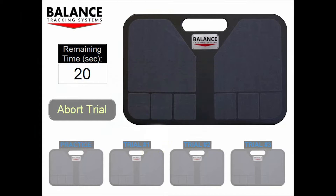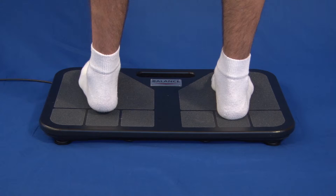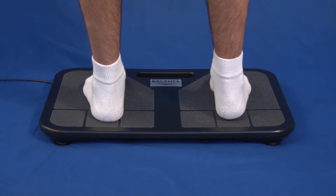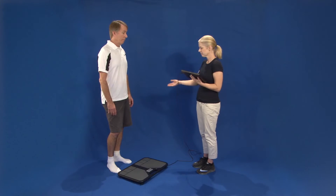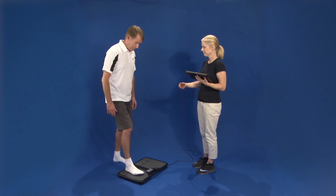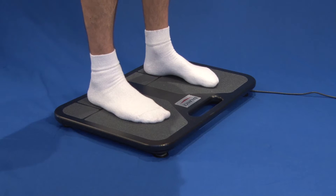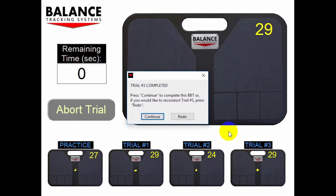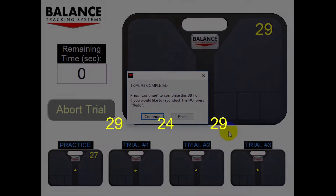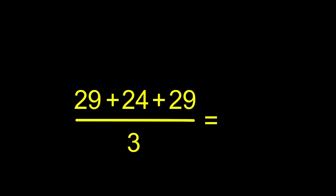Then we proceed with the testing. There are four trials, each lasting 20 seconds. Each trial measures the centimeters of postural sway. The first trial is a practice trial to familiarize the individual with the testing procedure. The next three trials are actual balance tests, and their results are averaged together to get the B-Tracks Balance Test result, called the BBT.